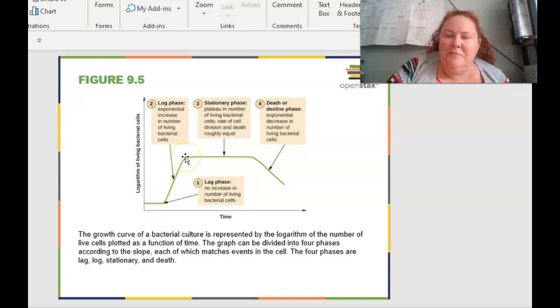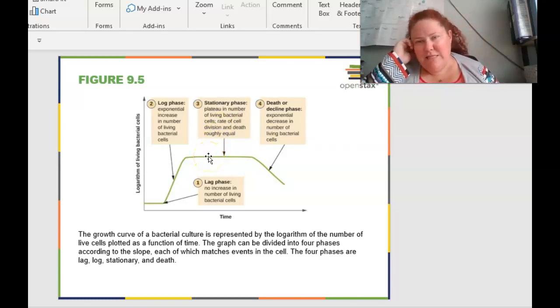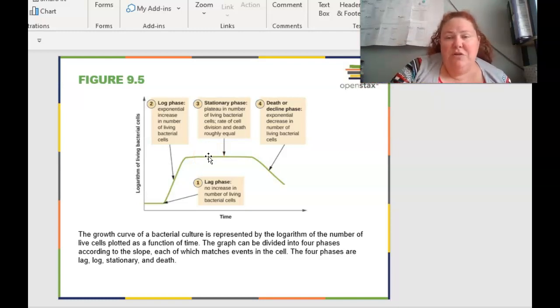And then after a while, cells are grown in a small area. So after a while, we're going to tap out and not be able to grow anymore because we're out of nutrients. So this is where that stationary phase is where there is a plateau or a leveling of the number of living bacteria cells that are being made. And so this is where the rate of cell division and cell death is roughly the same. And then after that, when we're completely out of nutrients, then you're going to have cellular death or a decline phase. And this is when you have an exponential decrease in the number of living bacterial cells.